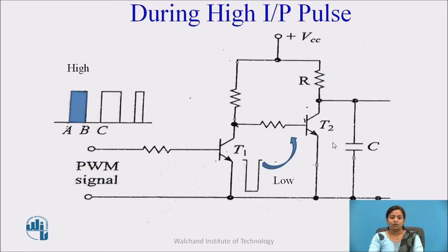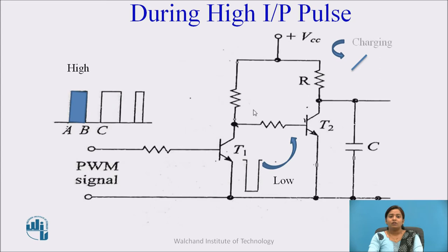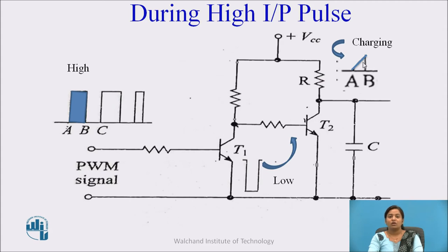At that time, T2 works in the cut-off region, so it acts as an open switch. The moment T2 works in cut-off region, the capacitor starts charging through the RC circuit. This capacitor charges up to the end of the pulse, meaning up to point B. So for a time duration A to B, the charging voltage of this capacitor appears at the collector, and this charging voltage is proportional to the width of the pulse.